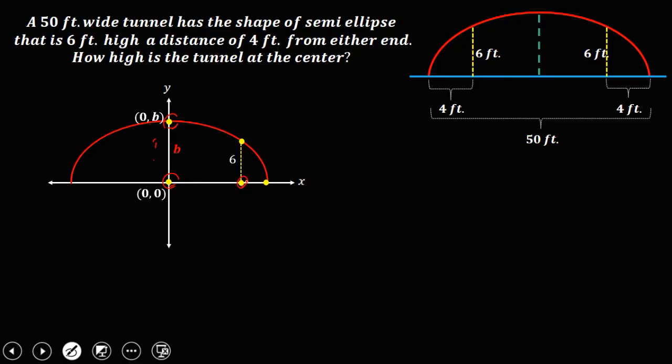And for this area, since from the end of the tunnel to this area, that's 4 feet, and from the center to this point, that's 25, because half of 50 is 25. So therefore, this area is 21. That's 25 minus 4, equals 21. So we can say now that this point is (21, 6).